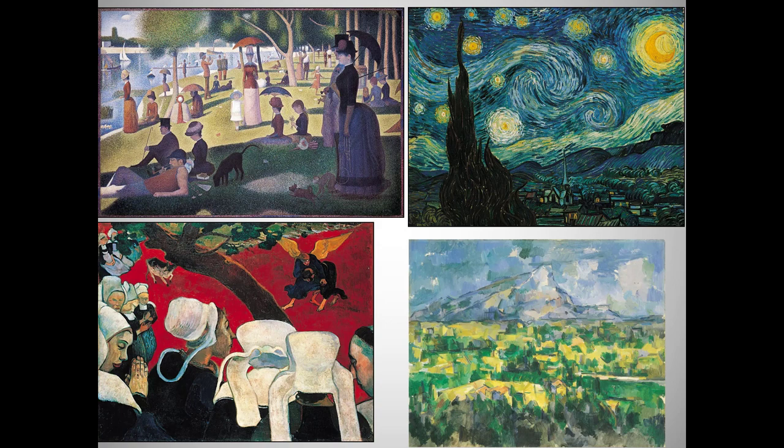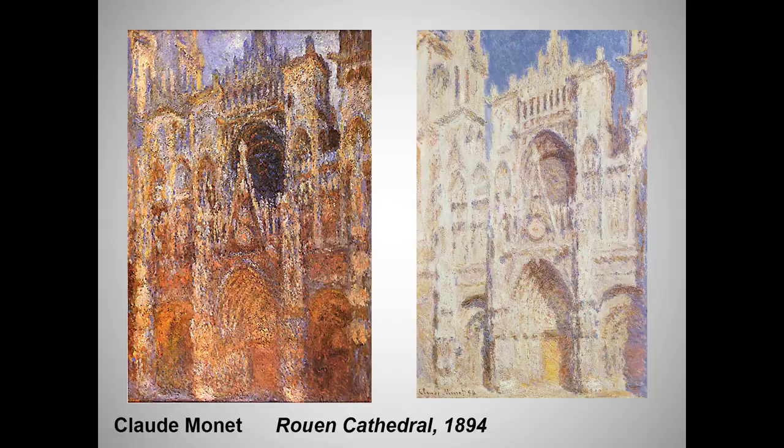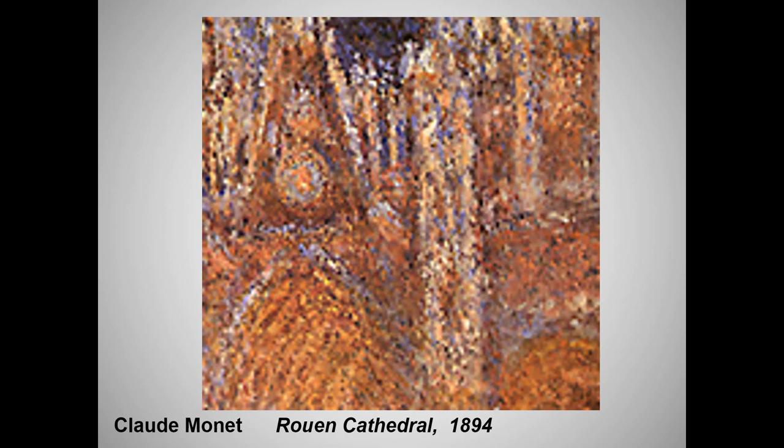The post-impressionists were also trying to solve two problems they saw with impressionism. The first was that the impressionists' effort to capture a brief fleeting moment meant their paintings lost some ability to capture the abiding reality of a three-dimensional world. Looking back at Monet's Rouen Cathedral, in capturing the momentary appearance of the building in different light, Monet sacrifices some of what Renaissance and Baroque painters worked so hard to achieve — the illusion of form in space.